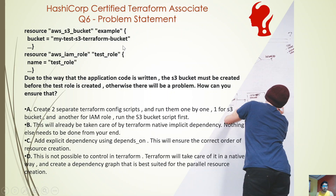An S3 bucket with this name and an AWS IAM role with this role. Now, due to the way that this application code is written, the S3 bucket must be created before the IAM role is created, otherwise there will be a problem. How can you ensure this? Basically, the requirement is that the S3 bucket needs to be created first.